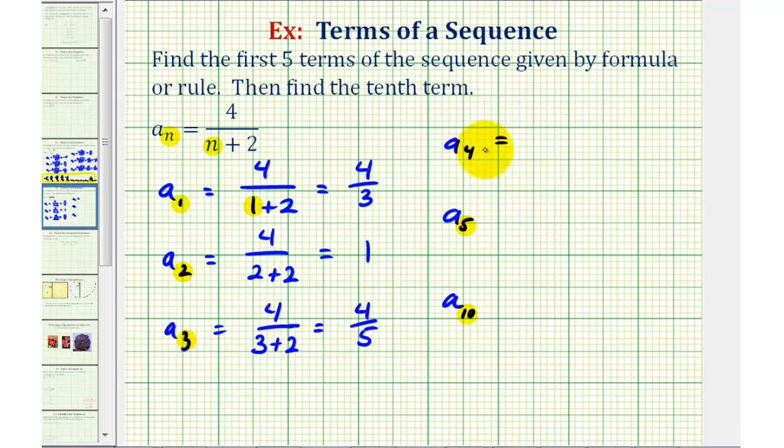And for a sub four, n is four, so we have four divided by the quantity four plus two. This would be four sixths, which simplifies to two-thirds. Our fourth term is two-thirds.